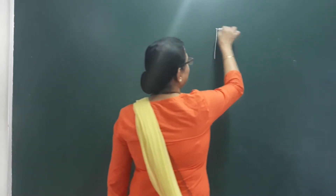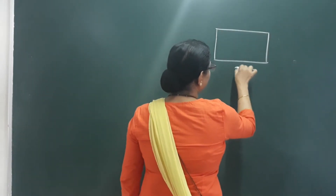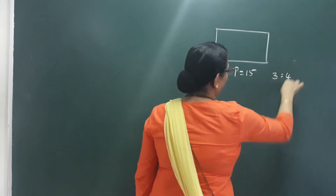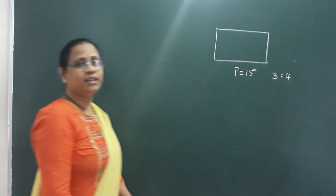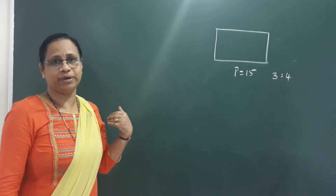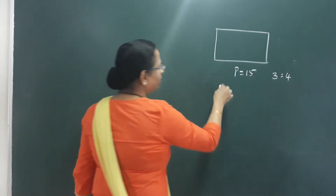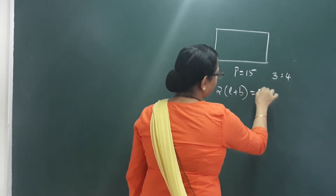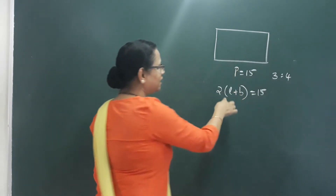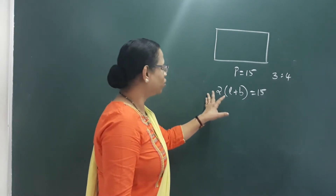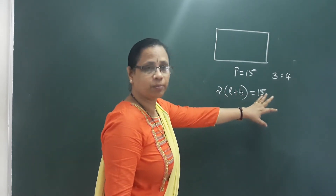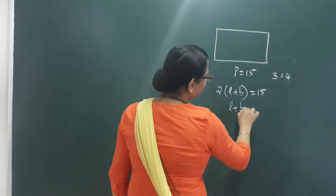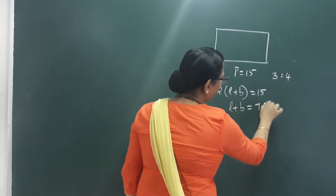We say that a rectangle has perimeter 15 centimeters, with sides in the ratio 3 is to 4. How do we construct it? We think: 2 into (L plus B) equals 15. The perimeter formula for a rectangle is 2 into (length plus breadth) equals 15. So length plus breadth equals 7.5, that is 15 by 2.